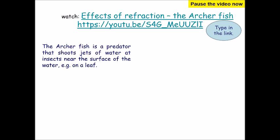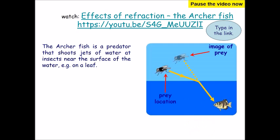The archerfish is a predatory fish that shoots jets of water at insects near the surface of the water. Type in that video link and pause this video to watch what the archerfish does. We would think that the prey is in a straight line from us if we're underwater. However, we now know that's not the case — where the prey actually is would be at an angle, because the wave is refracting towards the line of normal when it hits the water. But the archerfish has learned how to shoot jets of water, understanding refraction of light in water, so that it can hit its prey even from underwater.